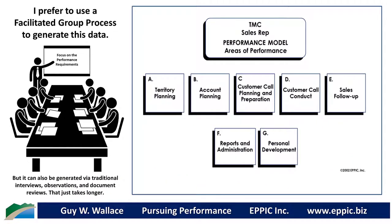So here's my example. This is actually data that was generated back in the mid-1980s, as I've been doing this for a long, long time. This was about a sales rep. I've changed some of the language and wording, so please don't get hung up in all of that. I'll demonstrate to you how I might go about doing this. We start with: what are the areas of performance? What are the major segments or chunks of the job? And we start with a blank page.